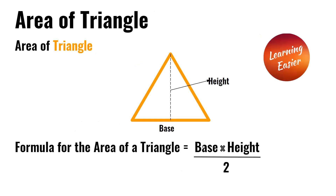Area of the triangle. The formula to find the area of the triangle is base times height divided by 2.